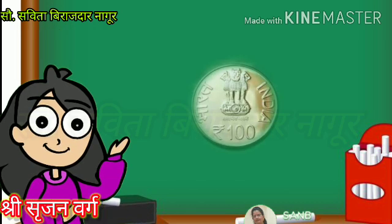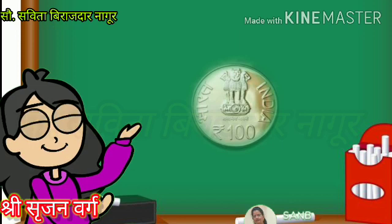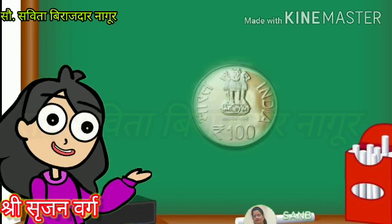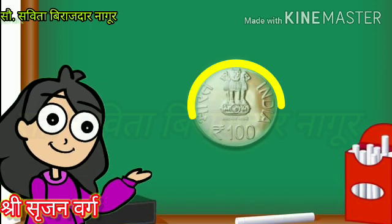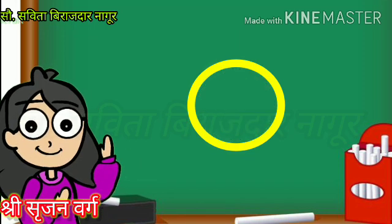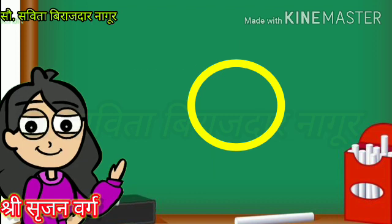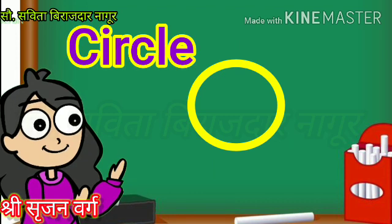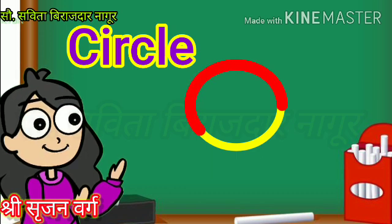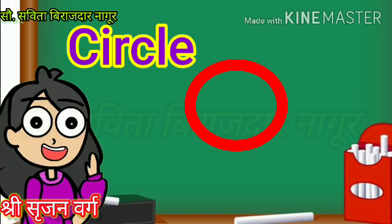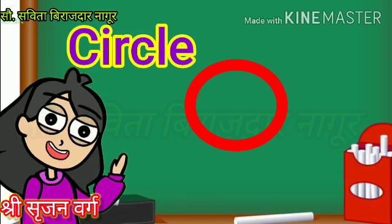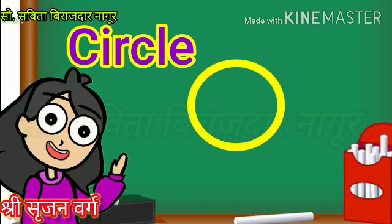Now take a coin. Place it on the paper. Hold it firmly. Draw a line by moving your pencil along the edge of the coin. Now remove the coin. Observe the shape that you drew on your paper. Which shape is it? This is a circle. A circle has only one curved edge. It has no straight side.